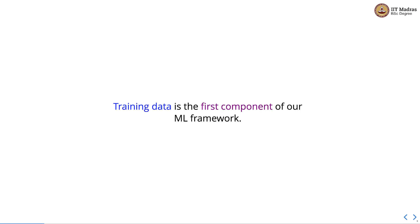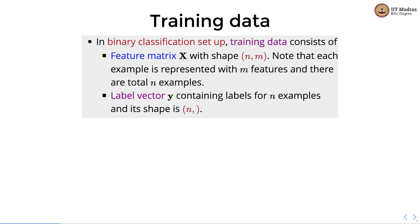Training data is the first component of our machine learning framework. For SVM in a binary classification setup, training data consists of a feature matrix X with shape n cross m. Note that each example is represented with m features and there are a total of n examples. The label vector contains labels for n examples and its shape is n.